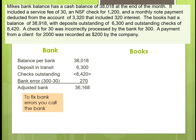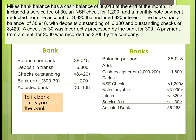Starting with the balance per books, we add back the cash receipt error — the $2,000 received was recorded as $200, so we add $1,800. Then we deduct the non-sufficient funds check, the notes payable, the interest expense, and the service fee. The books balance to $36,168. Remember, all of these adjustments on the book side require journal entries.